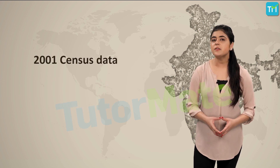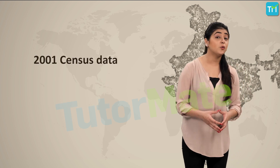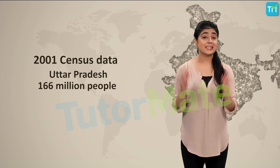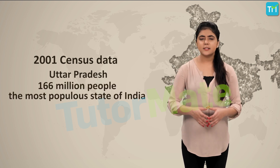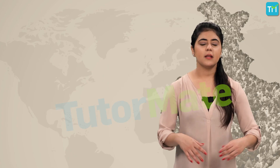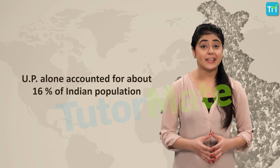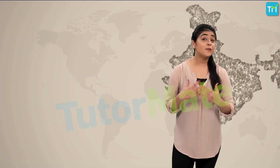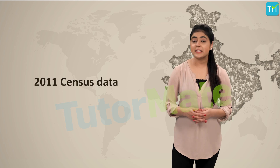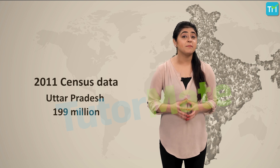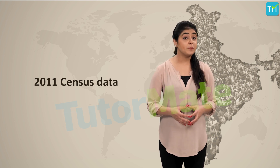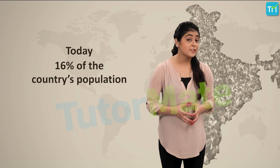The 2001 census data reveals that Uttar Pradesh, with a population of 166 million people, is the most populous state of India, accounting for about 16 percent of the Indian population at that time. According to the 2011 census data, Uttar Pradesh shot up to a population of 199 million and still held its position as the most populous state, still accounting for 16 percent of the country's population.